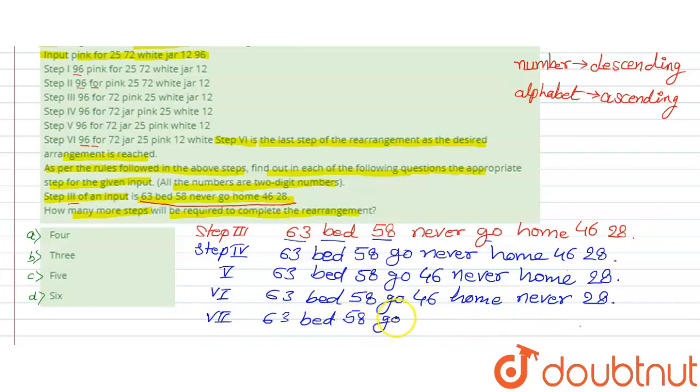Step 7: we have 63 bad 58 go 46 home 28 never. The numbers are 46, home, then 28, then never as it is. So in the 7th step, our rearrangement is completed.